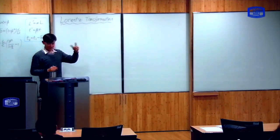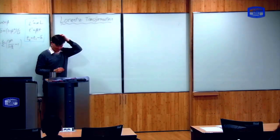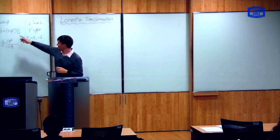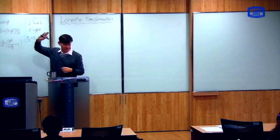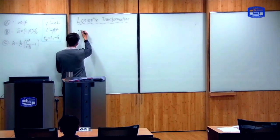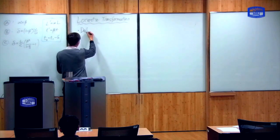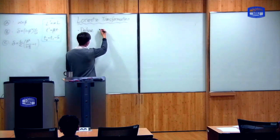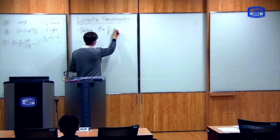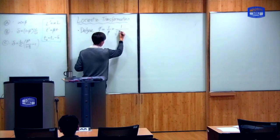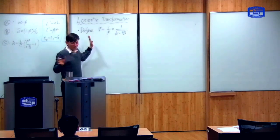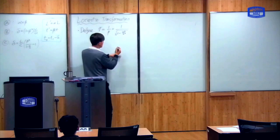This is the transformation of space and time coordinates between different observers, once you take into account these effects with the correct values of alpha, beta, and delta. Before doing that, it's useful to define the constant gamma, which is equal to one over beta, which is equal to one over the square root of one minus u squared over c squared. That's a definition used a lot in special relativity.